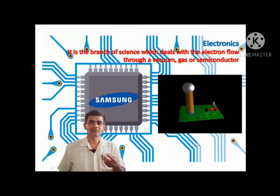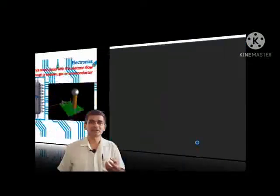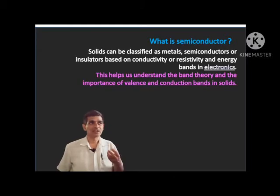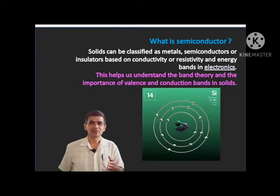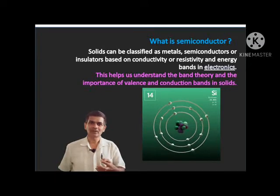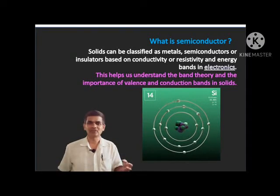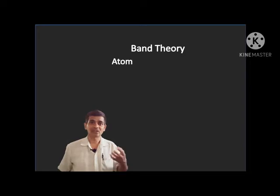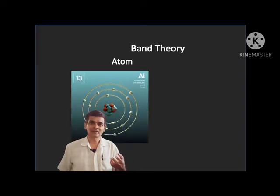In these electronic devices, whatever we are using is a semiconductor. What is a semiconductor? The solids can be classified into three types: metals, insulators, and semiconductors, based on conductivity, resistivity, or band structure. Based on band theory or band structure, we can understand how solids are classified.